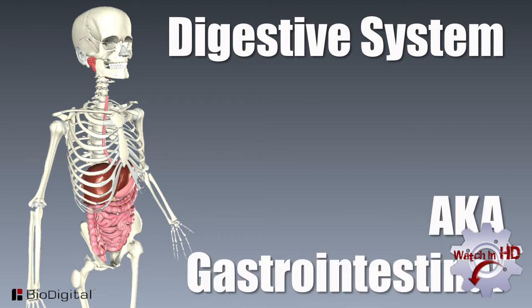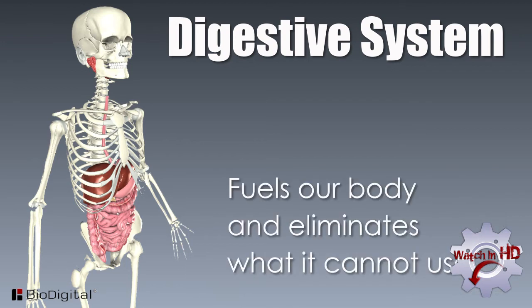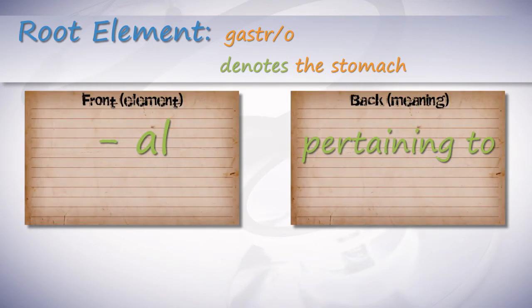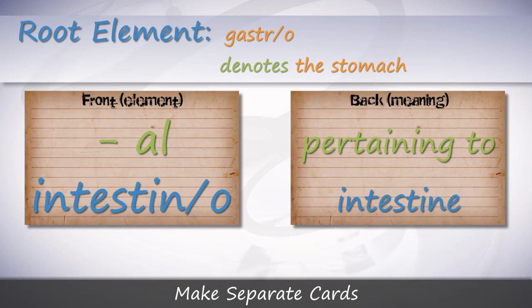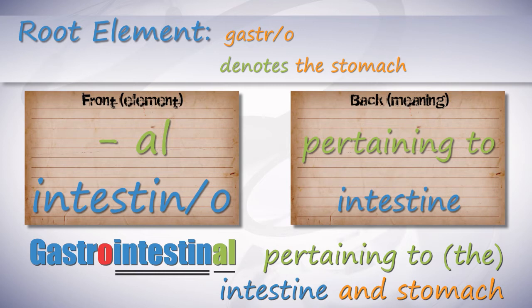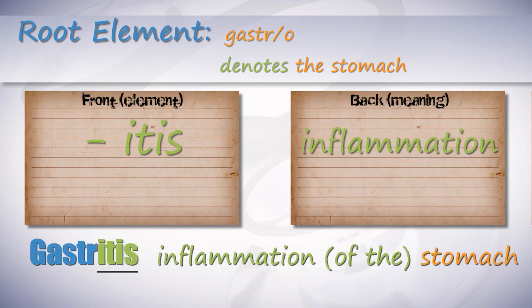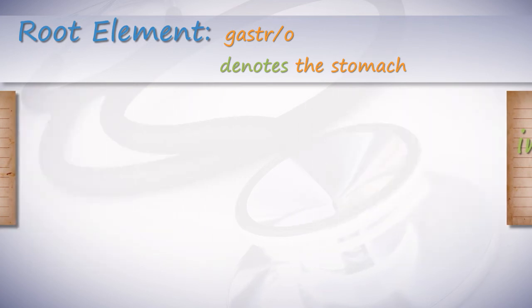The digestive system, also known as the gastrointestinal system, is the system that fuels our body and eliminates what it cannot use. The root word gastro denotes the stomach; the suffix al means pertaining to; intestino means intestine. Gastrointestinal is pertaining to the intestine and the stomach. Itis means inflammation, so gastritis is inflammation of the stomach.